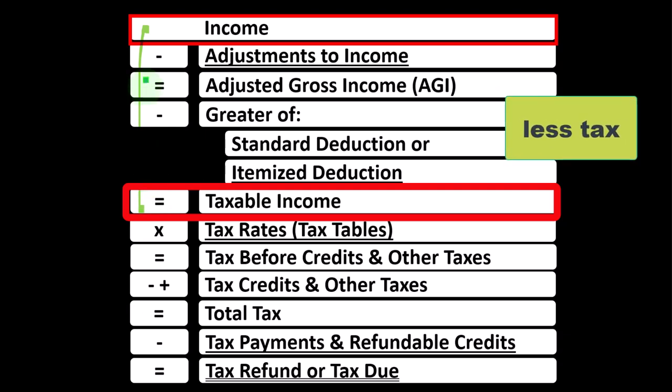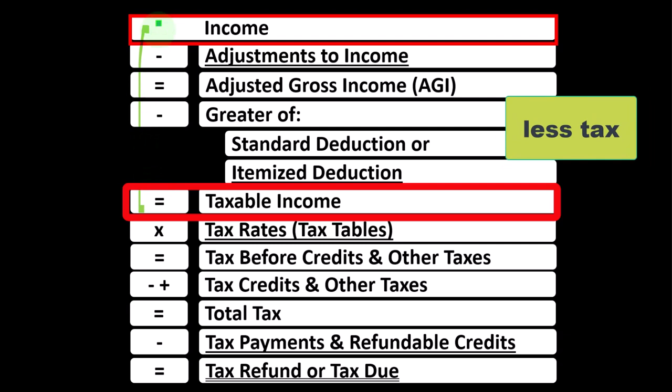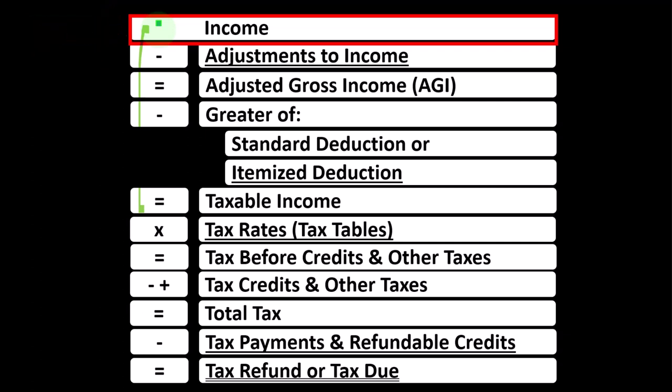An income statement typically has income minus expenses resulting in net income. The tax income statement has income minus various deductions resulting in taxable income. We want taxable income as low as possible, because that will usually result in less tax. Therefore, when looking at line one income, we'd like to have it as low as possible, with as much income exempt or legally excluded as possible.